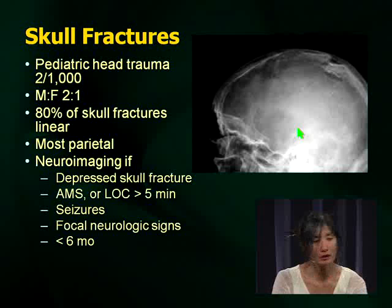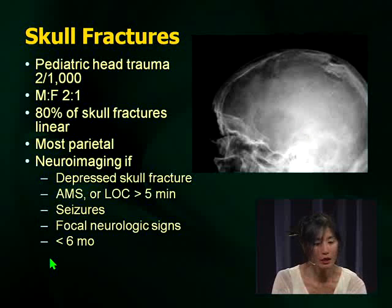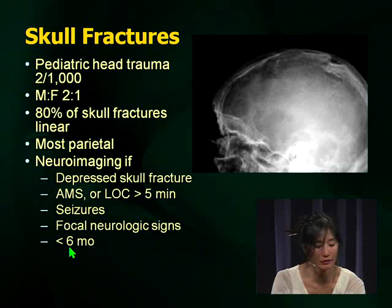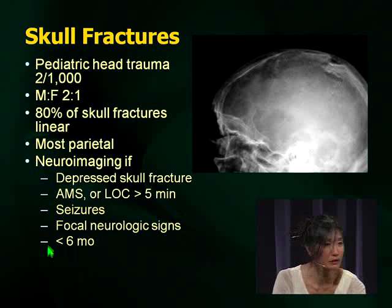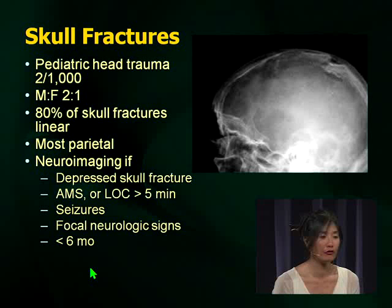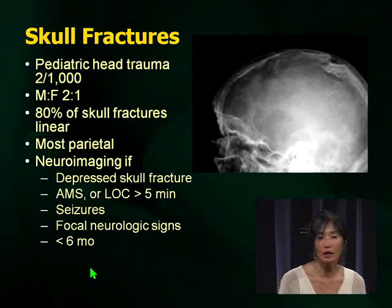Here are criteria for getting neuroimaging. On the next slide are criteria evaluated for sensitivity for finding a significant problem. Common sense: if there's altered mental status, loss of consciousness, seizures, focal neurologic signs, or a very small baby — because even a fall off a changing table can cause a parietal skull fracture in tiny babies whose bones are much softer.